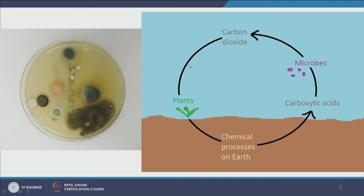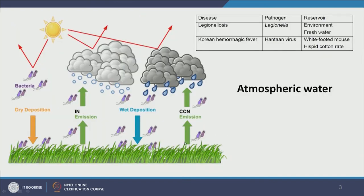On the right panel we have a basic schematic of how microbes are processed from air to terra. Starting from plants, their root activity and chemical processes in earth affect the soil microbiology. These microbes are then released into the air along with carboxylic acid and carbon dioxide. There are chemical reactions happening, but they are released into the air, use whatever nutrients they can find, and eventually find themselves back in the soil.